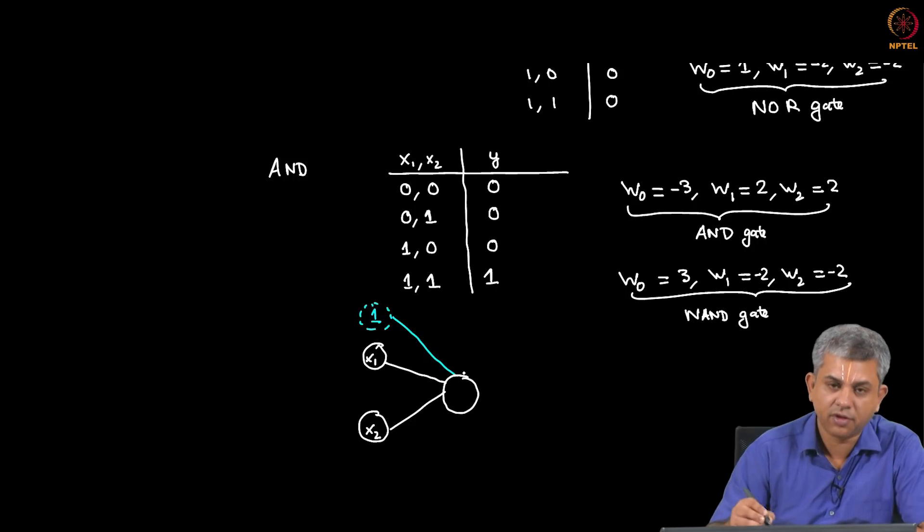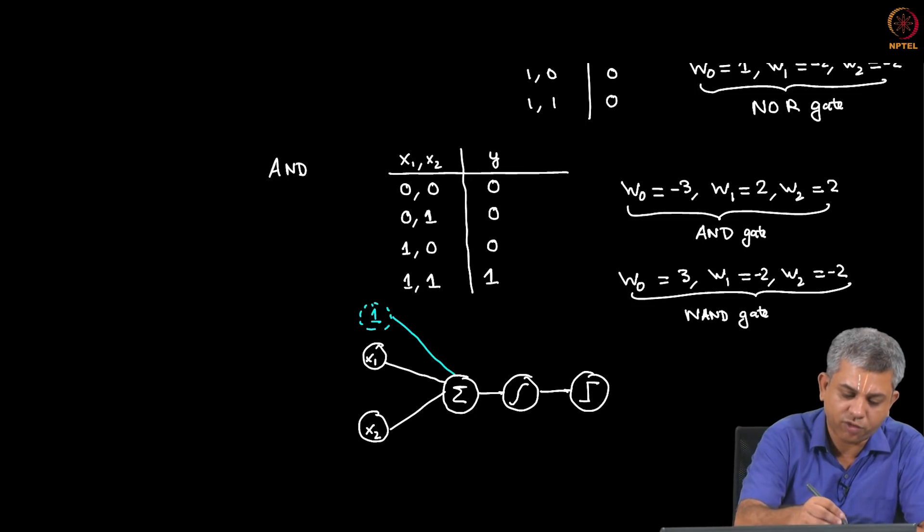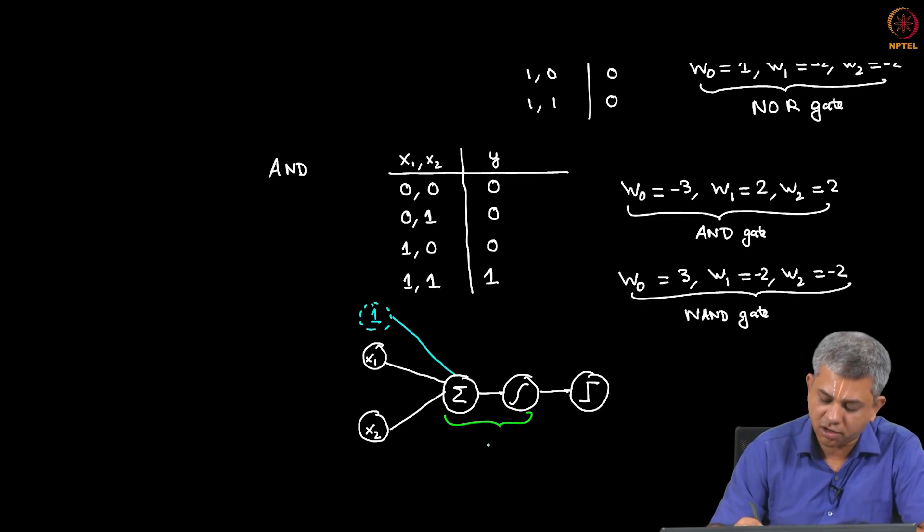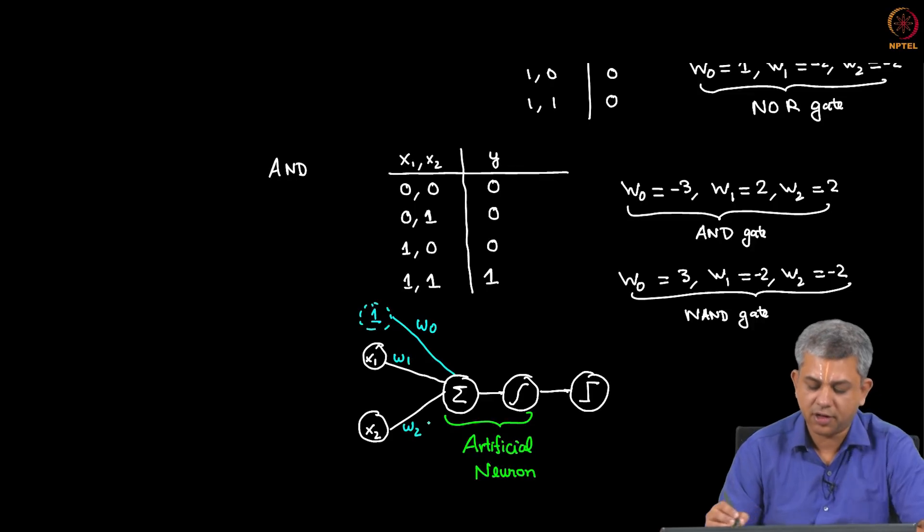Followed by our weights, followed by the sigmoid, followed by a classification. So this portion put together, as we saw earlier, can simply be called an artificial neuron. We will write W0, W1, W2.